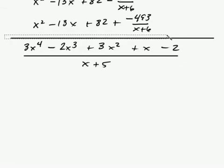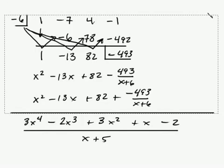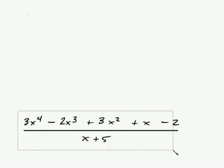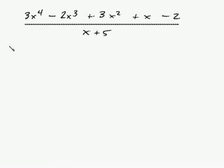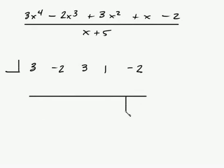All right, let's get rid of some of this stuff up here. We don't need it. So that's a new problem. So what we're going to do is write down the coefficients. And the coefficients are going to be 3, negative 2, positive 3, positive 1, and a negative 2. And let's set this up like we did before.